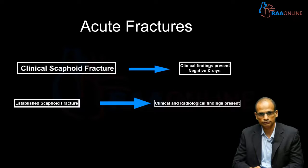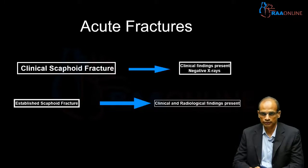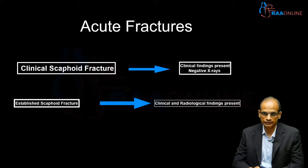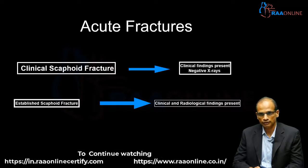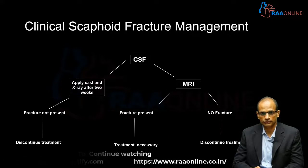Looking at acute fractures, there are two types: the clinical scaphoid fracture and the established scaphoid fracture. A clinical scaphoid fracture is one we encounter frequently — the patient gives a history of a fall on an outstretched hand, and examination reveals tenderness in the anatomical snuffbox, scaphoid tubercle, or proximal pole, but X-rays are negative. An established scaphoid fracture presents similarly but has both clinical and radiological evidence. Management of the clinical scaphoid fracture can be approached in two ways.